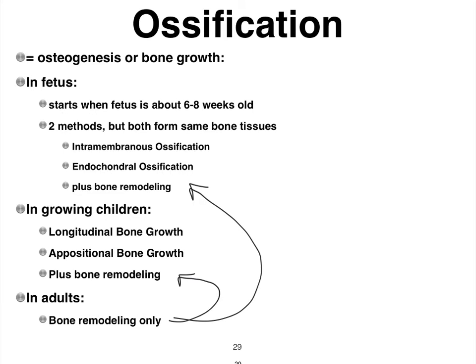We're going to focus in this video on intramembranous ossification. Only a few bones arise from this particular process. We're going to see that it is a number of the flat bones in our skull — for instance, your parietal bones, your frontal bones. And interestingly enough, also our clavicles.